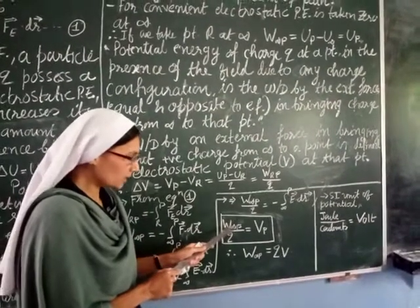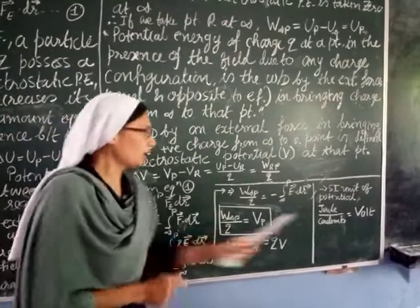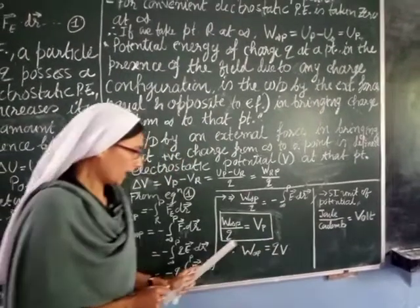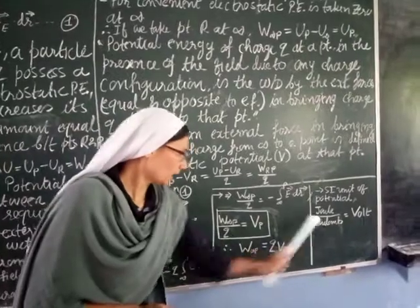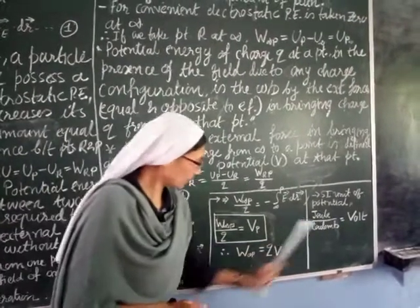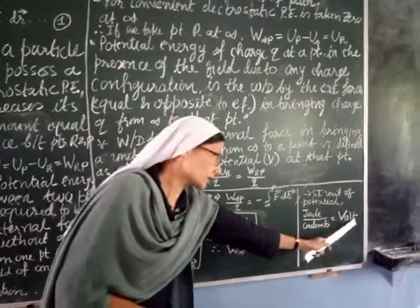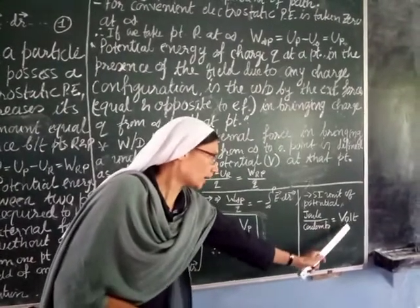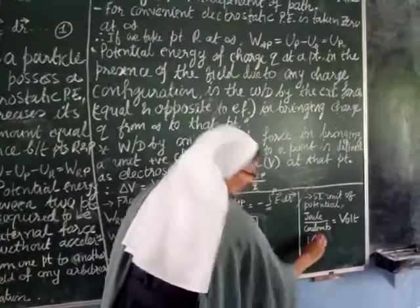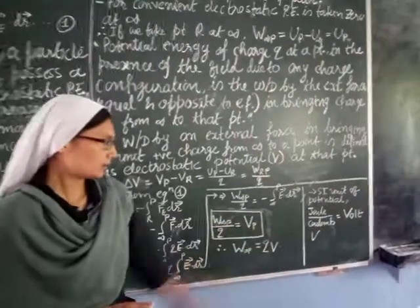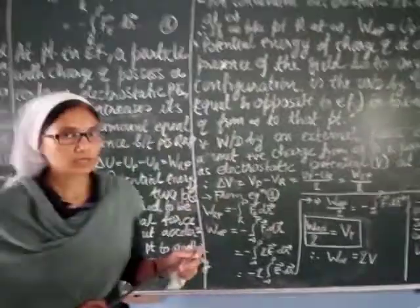Work done is energy, so its unit is Joule, and Q is the charge with unit Coulomb. Therefore Joule per Coulomb is the unit of potential, but it has been given a special name called Volt, and its symbol is capital V. Please remember: capital V is used for the potential.